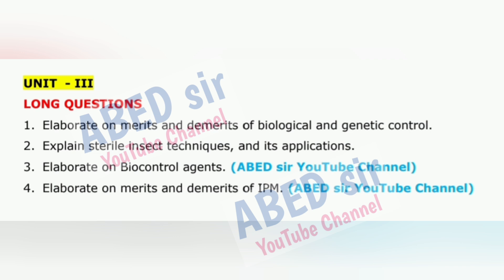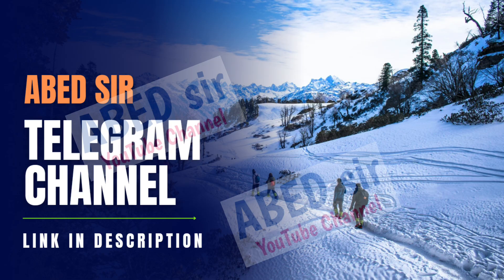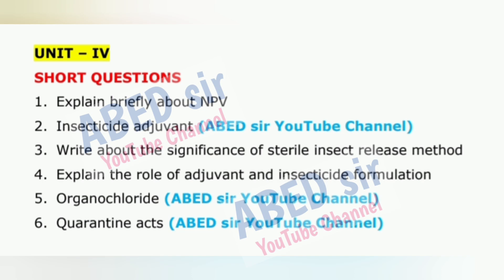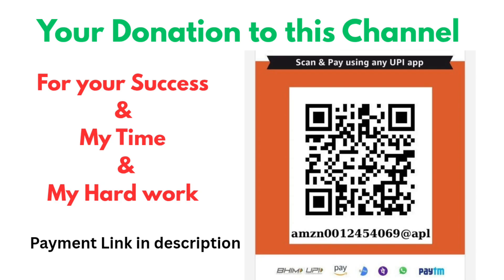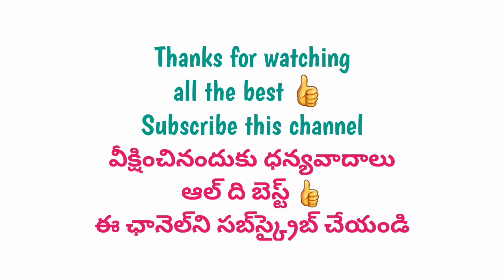Fourth, always start each answer on a new page. Fifth, write the question number clearly at the top left and center of the page. Sixth, don't miswrite or change question numbers. Seventh, use headings and subheadings and highlight them neatly — it makes your answer more readable. Eighth, use the last page as rough work and label it clearly. Ninth, in the last five minutes, check all question numbers and quickly review your answers to fix any small mistakes.